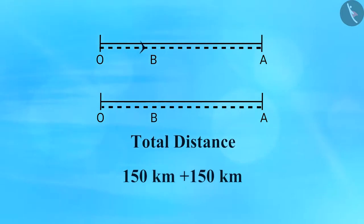The total distance covered by the train is 150 kilometers plus 150 kilometers, equal to 300 kilometers. Now, the initial and final positions are the same. Hence, the total displacement of the train will be equal to zero.